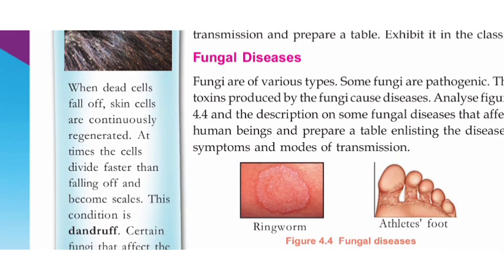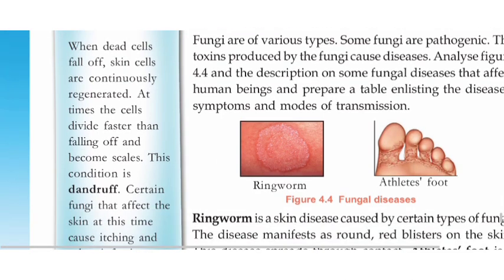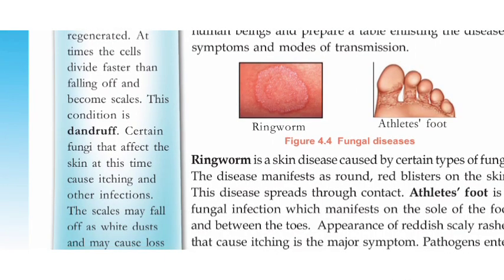When dead cells fall off, skin cells are continuously regenerated. At times, the cells divide faster than they fall off and become scales. When the cells fall off, skin cells are divided. This is a condition called dandruff, which is a function of fungus. By the end, it is affected by other infections and causes irritations.